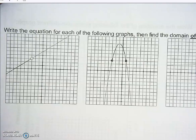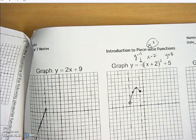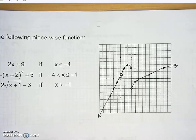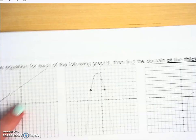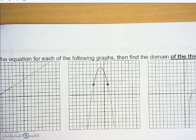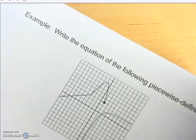This is part two of our piecewise functions notes. We're doing the opposite of what we did before — previously we were given the equations, drew the pieces, and combined them on one graph. Now we're given the graphs, we'll decide their equations individually, and then write those equation pieces in one large piecewise function notation.